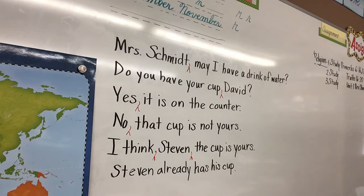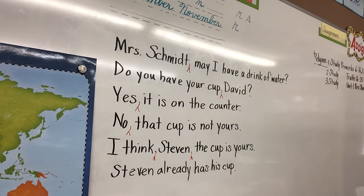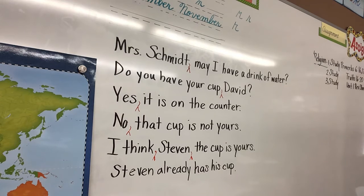I think, class, that we should look in this animal book. Before and after class — you're going to insert those commas because you are talking to the class. And it is not imperative, because she says I think that we should look — she doesn't say look in the book. So it is just a declarative sentence. Either way it would have gotten a period, but it is declarative, not imperative.